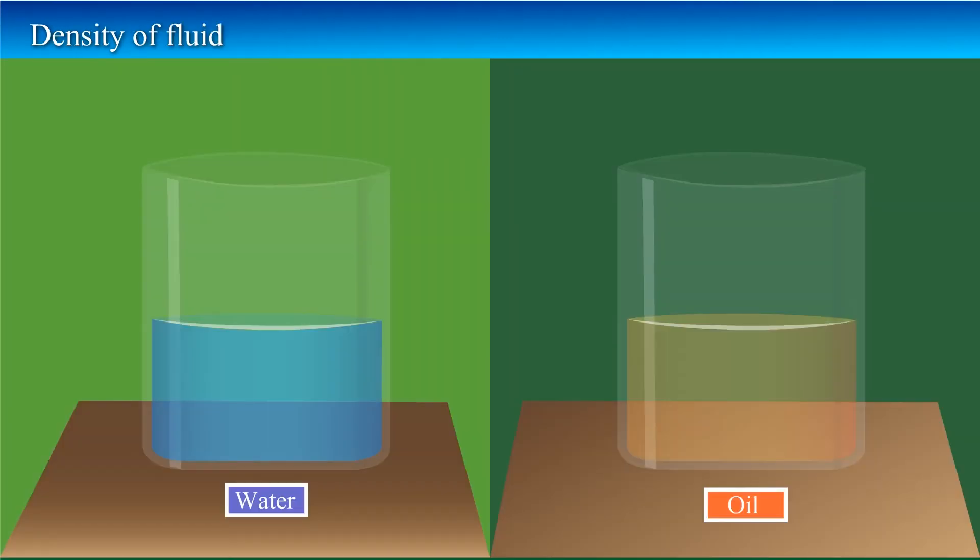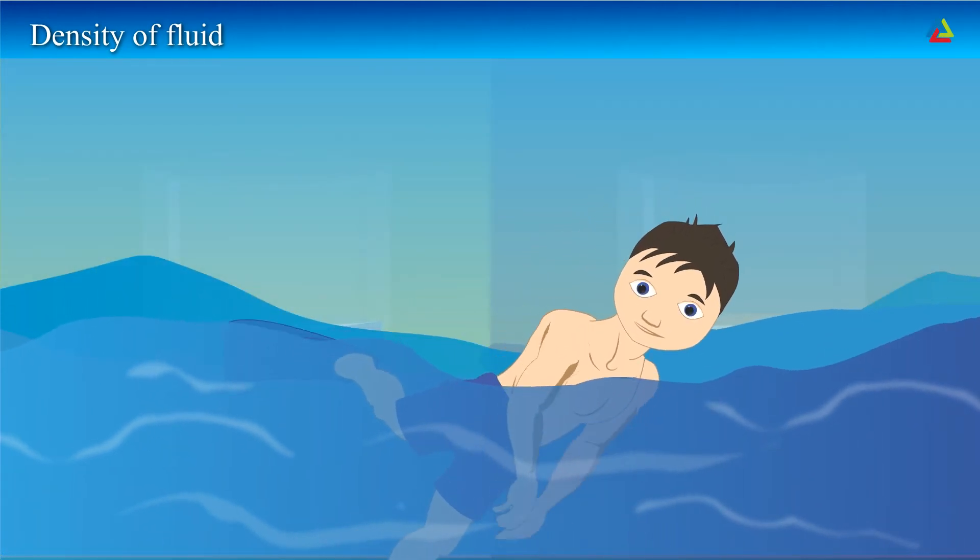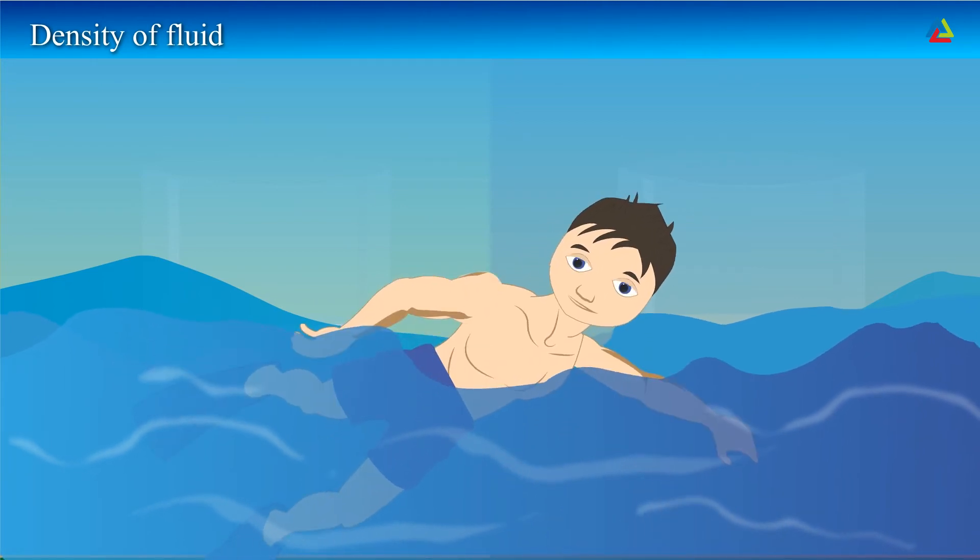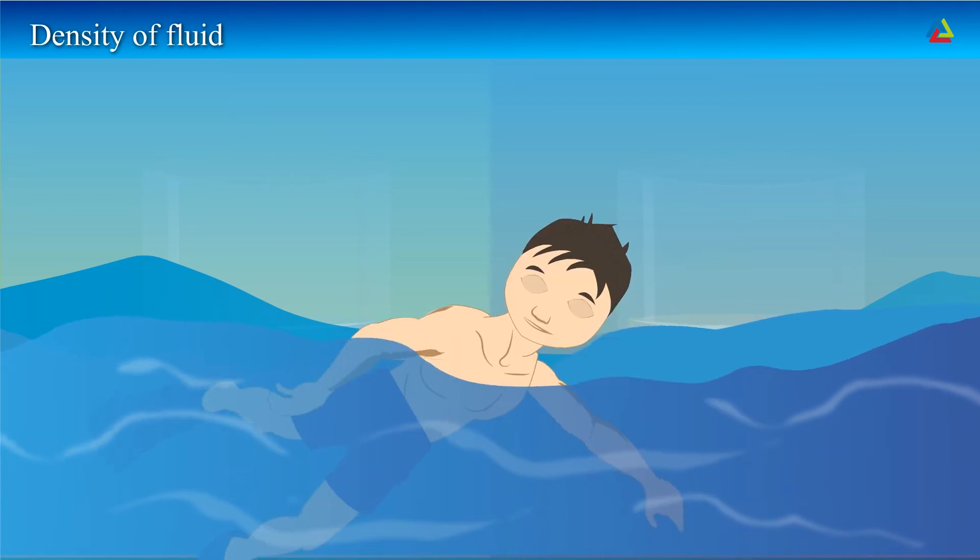The magnitude of buoyant force depends on the density of the fluid. That means if the density of the fluid is more, then the buoyant force exerted is more. Sea water is denser than fresh water of a river or pond. Hence it is easy to float in sea water because buoyant force exerted is more.